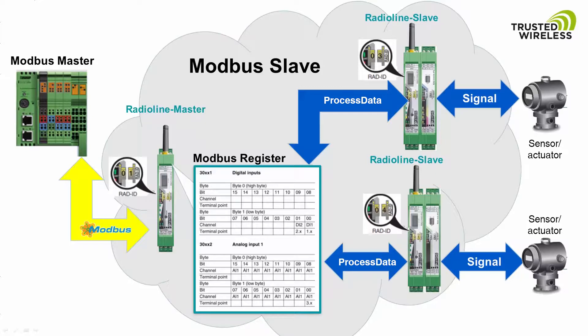Each I/O module in the network requires a unique I/O map address. This unique address provides the register offset for the data and allows the controller to access the individual I/O values.